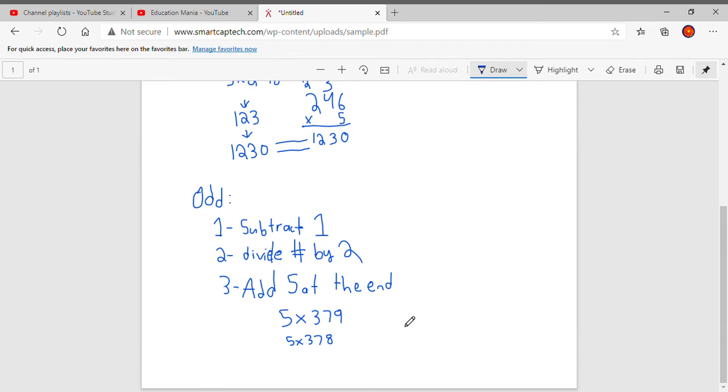When you do that, you get one and then 189. Finally add five at the end. So when you add five, you get 1895. So this would be our final answer.